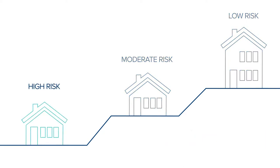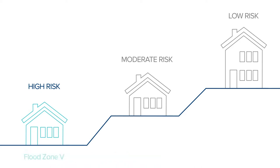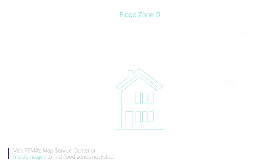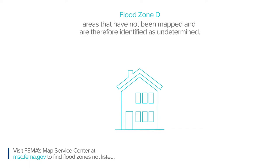Or the structure could be at a higher risk of flooding in flood zones that start with the letter A, which represents accumulation of surface waters, or V, which stands for velocity and covers properties by a large body of water where waves may crash onto the structure. Flood zones that start with the letter D are in areas that have not been mapped and are therefore identified as undetermined.